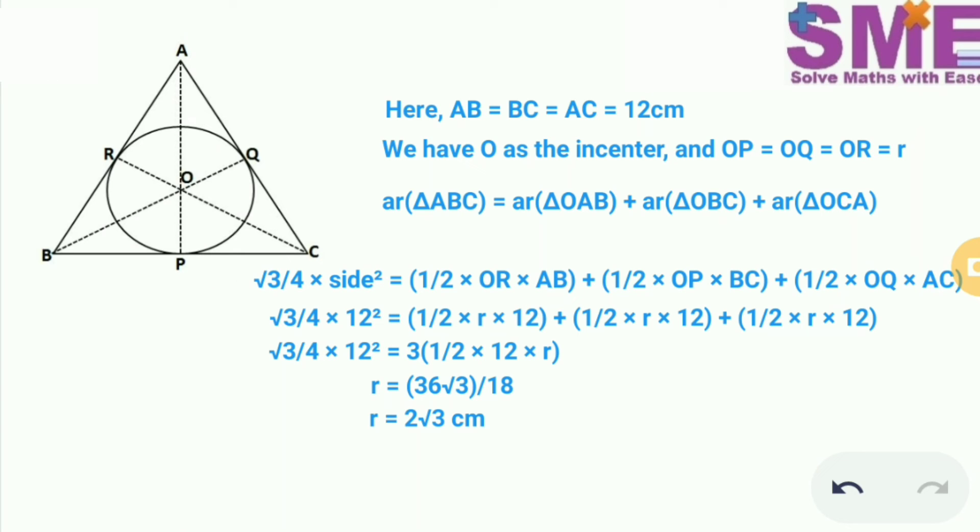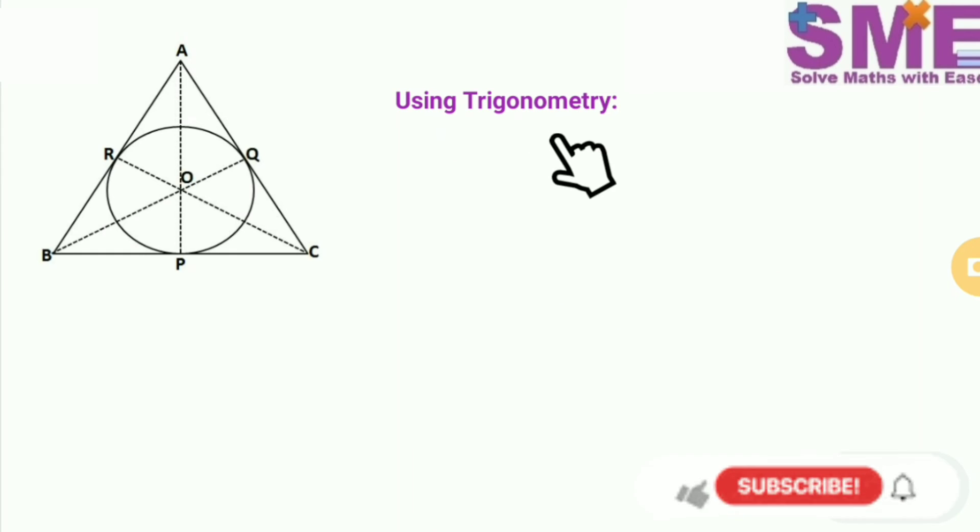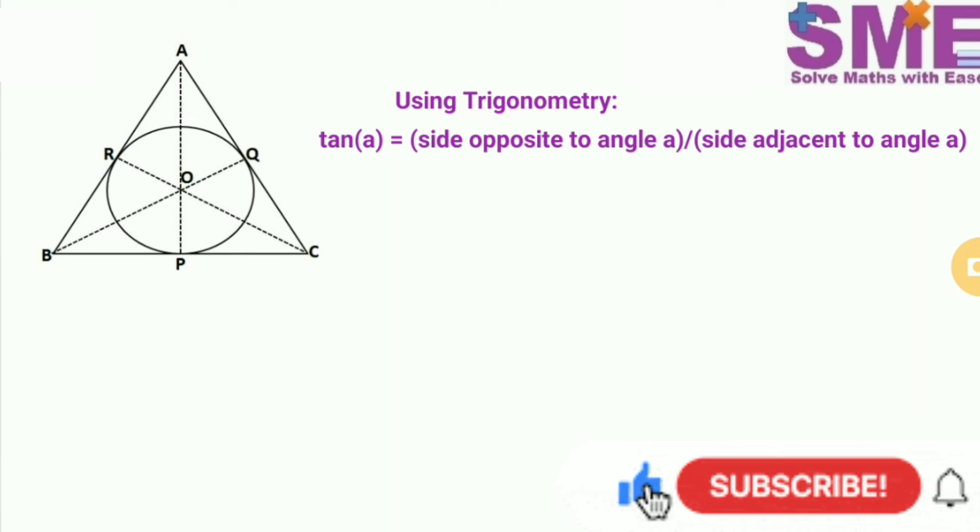Now we will find the radius of the circle using trigonometry. As per trigonometry we know that the tan of any angle is equal to side opposite to angle A divided by side adjacent to angle A.